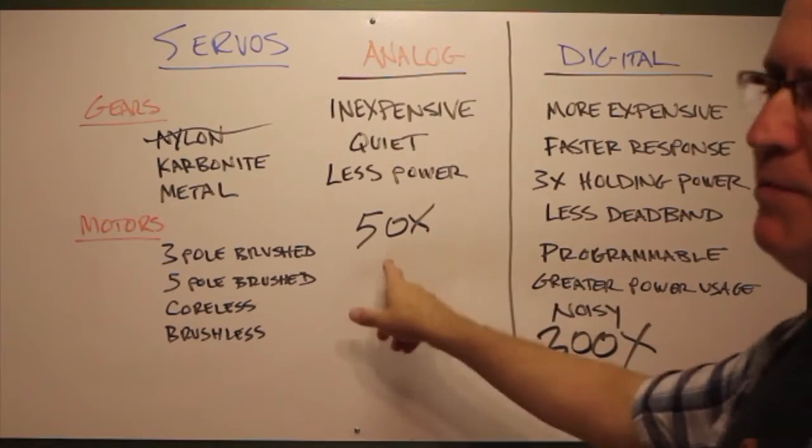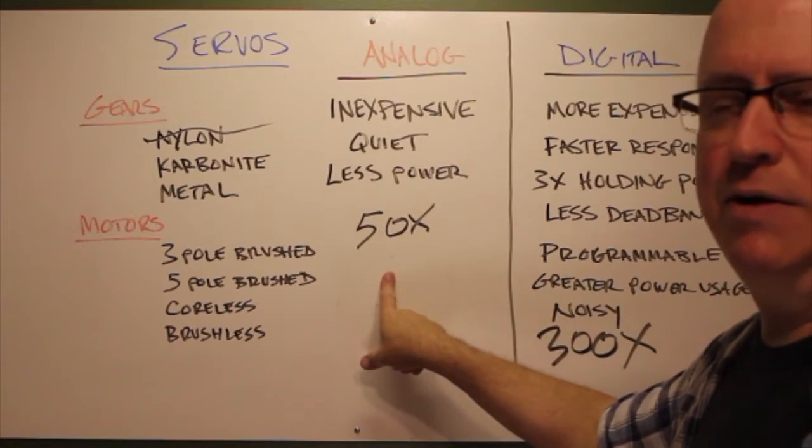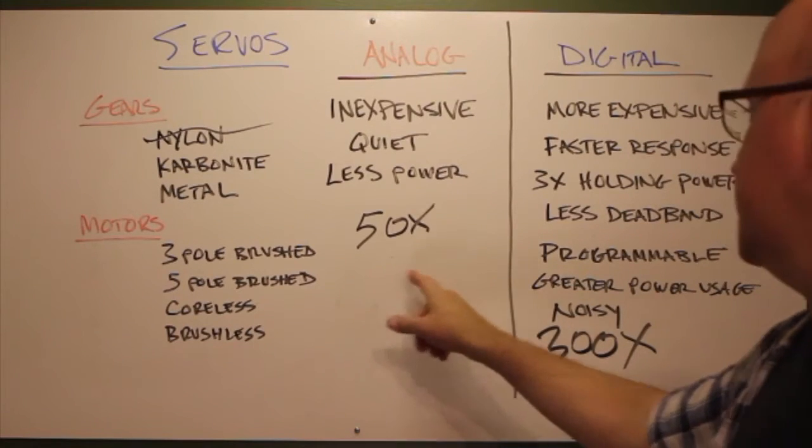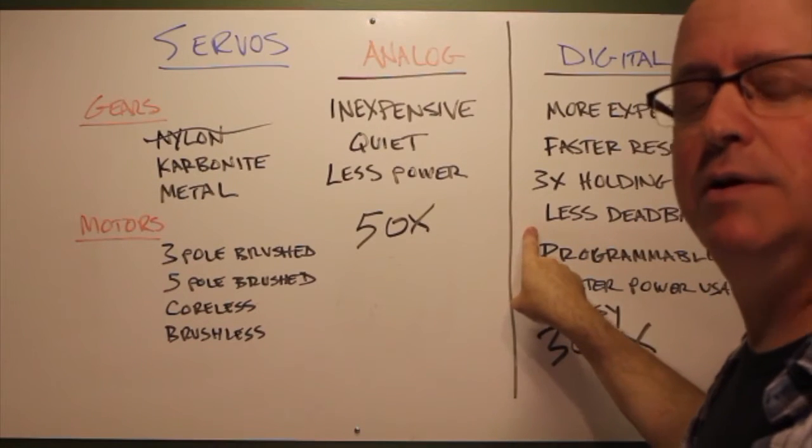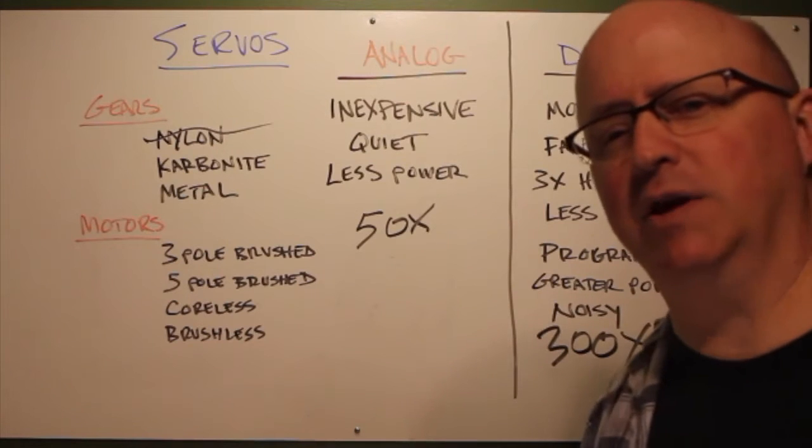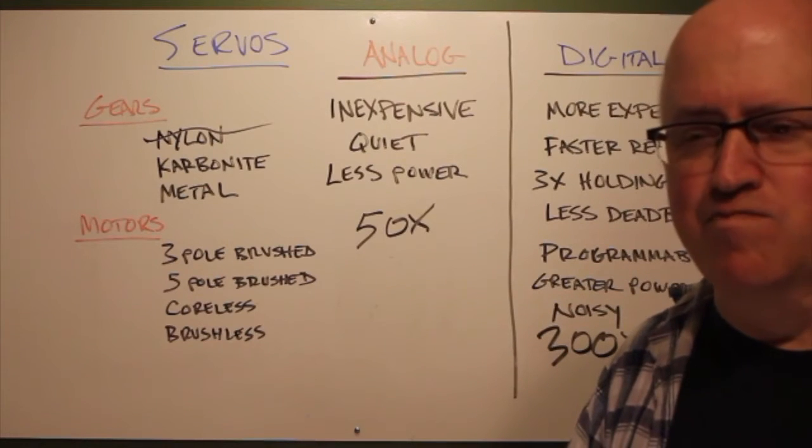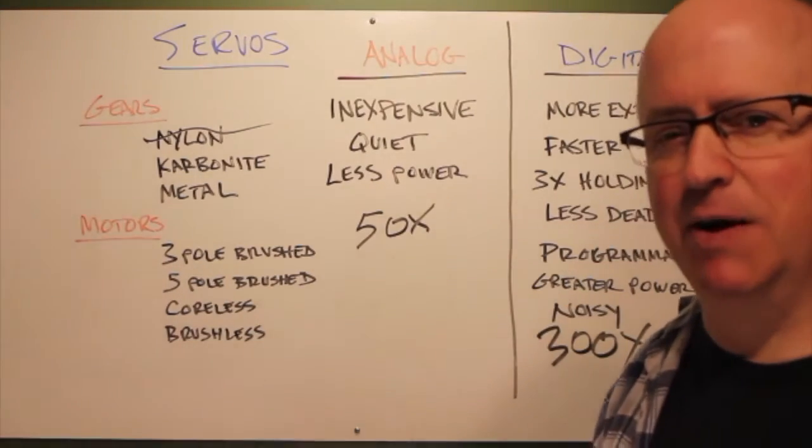The power consumption on a digital servo is quite a bit higher than on an analog servo. Some of these analog servos maybe they'll pull one amp on the upper end, maybe one and a half. Some of the more powerful digital servos can pull like four or five amps. So it's something to take into consideration when you're considering battery life - how long you're going to be at a convention wearing a costume. Do you want to be changing batteries all the time?